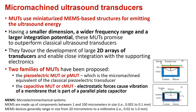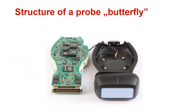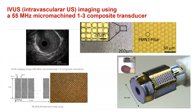Two main families of MUTs were developed: the piezoelectric MUT, which is the micromachined equivalent of the classical piezoelectric transducer, and the capacitive MUT, in which electrostatic forces cause vibration of a membrane that is part of a parallel plate capacitor. For example, this is illustrated by a butterfly-like structure, and an intravascular ultrasound imaging tool using a 55 MHz micromachined composite transducer.